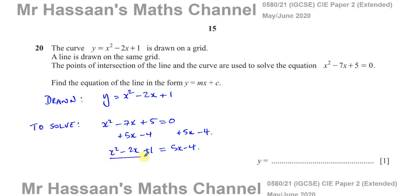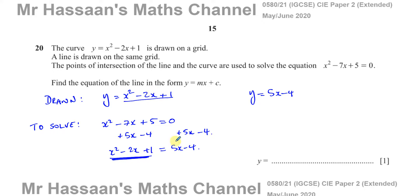What we have here now looks like what's drawn. In order to solve the equation, we have to draw the line on the other side: y equals 5x minus 4. We draw that on the same graph, and the places where they intersect will be the solutions to the original equation we've been given.